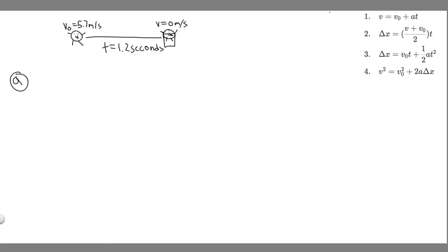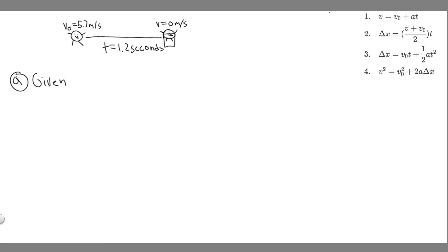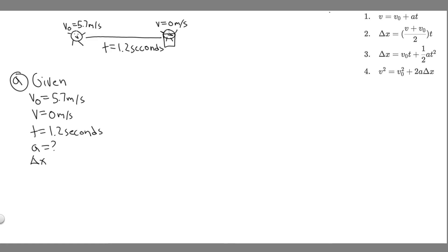For Part A, we're trying to find the acceleration, and for Part B, we're trying to find how far he slid. So let's write out the given kinematic variables. We're given V₀, the initial velocity, which is 5.7 meters per second. We're given the final velocity V, which is 0 meters per second, because at the end of the interval he's at rest. And we're given the time, which is 1.2 seconds. For A, we're solving for acceleration, and for B, we're solving for delta X — the change in position.